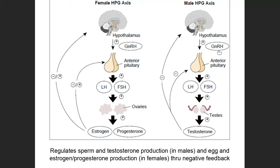The hypothalamus produces GnRH, which travels to the anterior pituitary, also located in the brain. GnRH has a positive feedback effect on the anterior pituitary — it causes the anterior pituitary to increase its function. One of those functions is to produce two hormones: LH, which stands for luteinizing hormone, and FSH, which stands for follicle stimulating hormone.